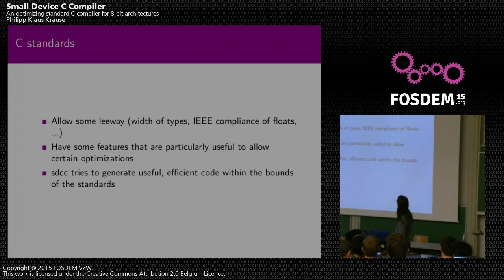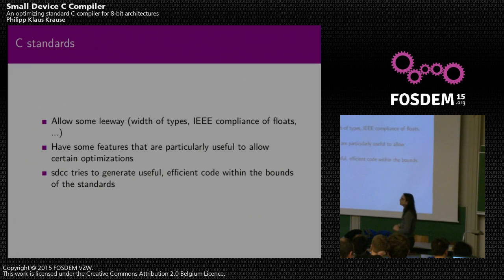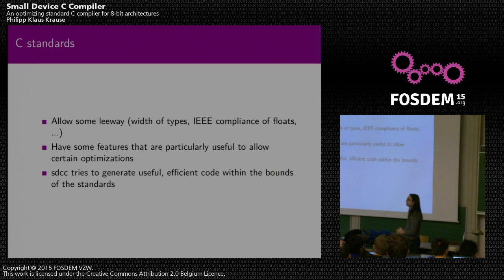Let's go on to standard compliance. The C standards are not as strict as some other language standards — they allow the implementation some freedom, and we can use that to get efficient code for small targets. For example, the width of integer and pointer types has some freedom. Floats don't have to be IEEE compliant. There are features particularly useful for optimizations. SDCC tries to generate useful, efficient code and be standard compliant. Sometimes those three goals conflict a bit, but I think we always found a reasonable compromise.